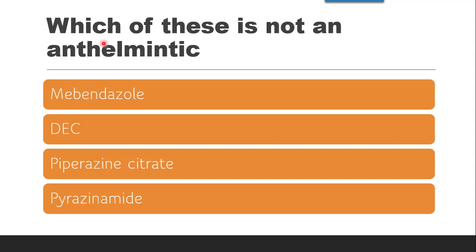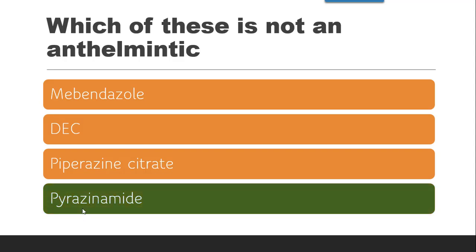Next question: Which of these is not an anthelmintic — whether it is Albendazole, DEC, Piperazine citrate, or Pyrazinamide? The correct answer is Pyrazinamide, which is not an anthelmintic drug. Pyrazinamide is an anti-tubercular drug.